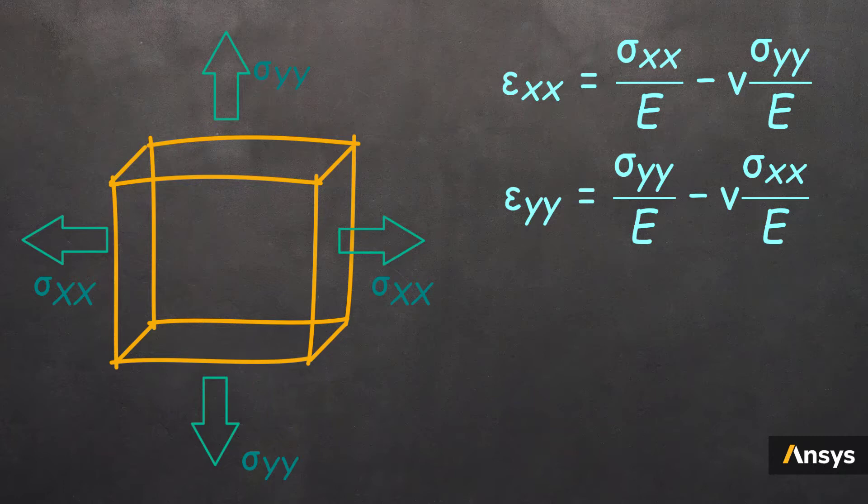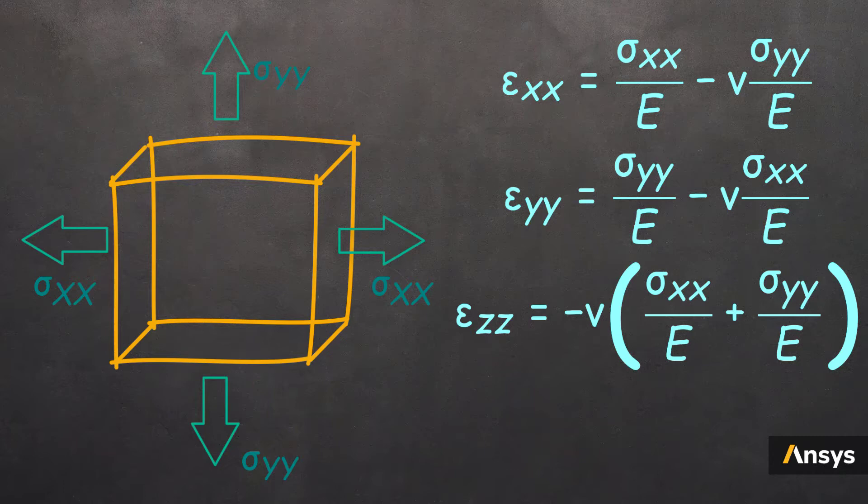Since there are no stresses applied in the z-direction, the only strain in z is due to the Poisson's effect, which is epsilon zz equals to negative of nu times sigma xx by E plus sigma yy by E. There are no external loads acting that can create noticeable shear strains, so we can set these terms to zero.